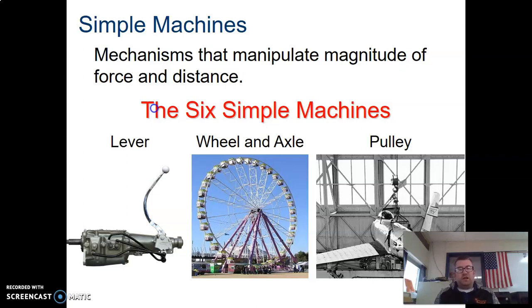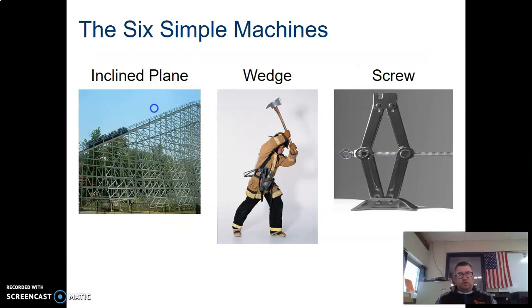Simple machines are mechanisms that manipulate the magnitude of force and distance. Essentially force and distance balance each other out and you just trade one for the other. If you want to reduce your force you would have to spread that out over a larger distance and vice versa. You also have inclined plane or commonly known as a ramp, but it's only a simple machine if you're going up, it's just a ramp if you're going down. A wedge similar to an axe and then a screw which combines a few different things.